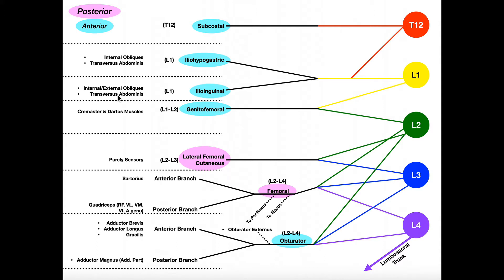The lumbar plexus consists of ventral rami of the spinal nerves, really between L1 and L4. The L4 nerve root is also involved in the sacral plexus, serving as a bridge between the lumbar plexus and the sacral plexus, which begins at L4 and runs down to S3. There is also a small contribution from T12, the ventral ramus of T12, but it's minor, so generally we say the lumbar plexus is L1 through L4. Importantly, these are the ventral rami — not the dorsal rami, and not the spinal nerves themselves.